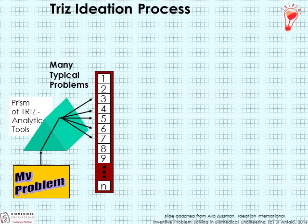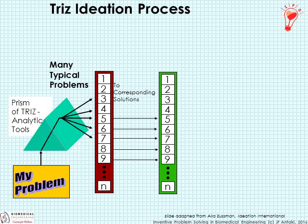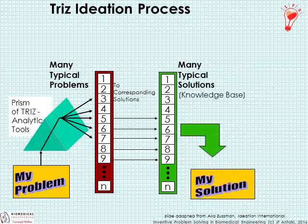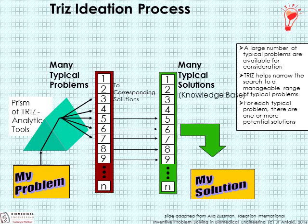He then sought to provide principles by which those same patterns could be transferable and generalized so they could be used on any problem. You have a new problem presented to you; it is decomposed into a set of sub-problems or contradictions. You apply the corresponding solution based on the historical pattern from the patent literature, then apply that set of solutions in an analogous way to create a solution for your problem.